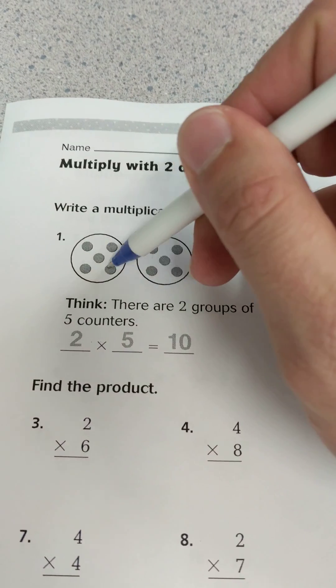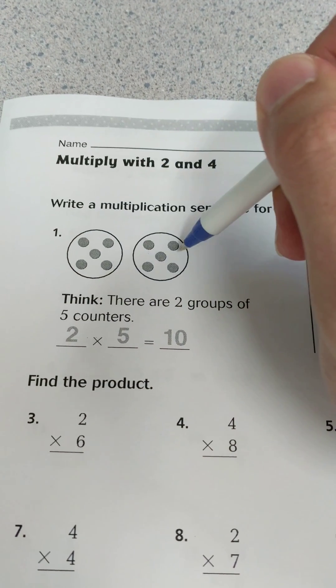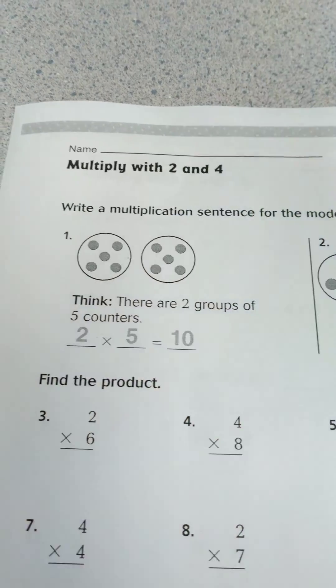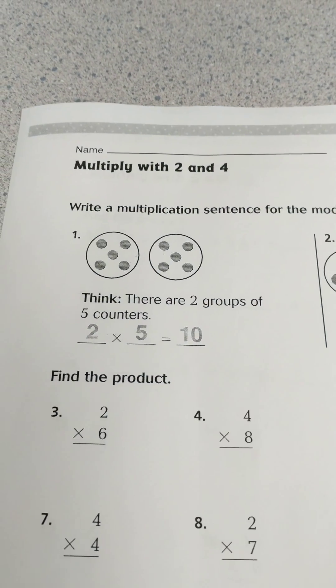I could also count 1, 2, 3, 4, 5, 6, 7, 8, 9, 10, or I could count by 5s, 5, 10, to figure that out. So that's how you figure out those.